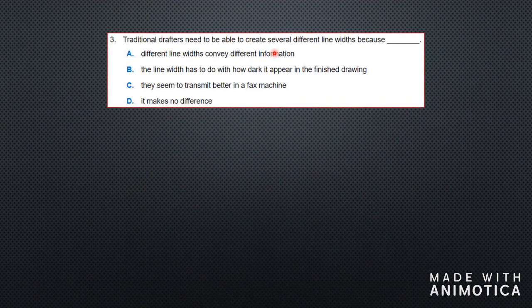Question number three: traditional drafters need to be able to create several different line weights. Why do you need several different line weights or line thicknesses? Is it because different line weights convey different information? Is it because of how dark the finished drawing appears? Is it because they print better in a fax machine or printer? Or does it not make any difference?